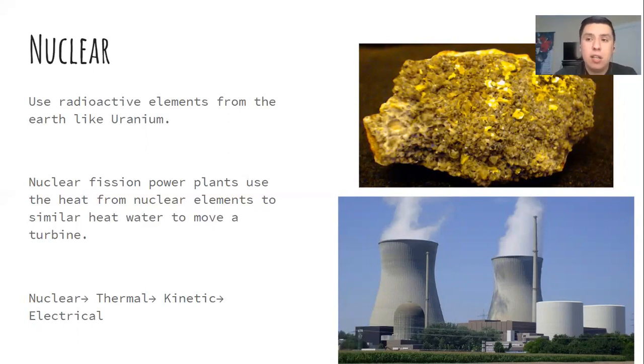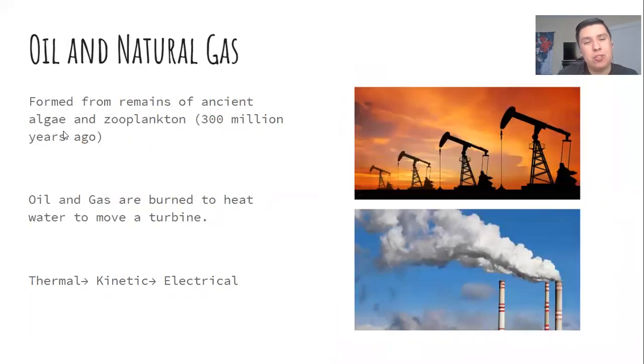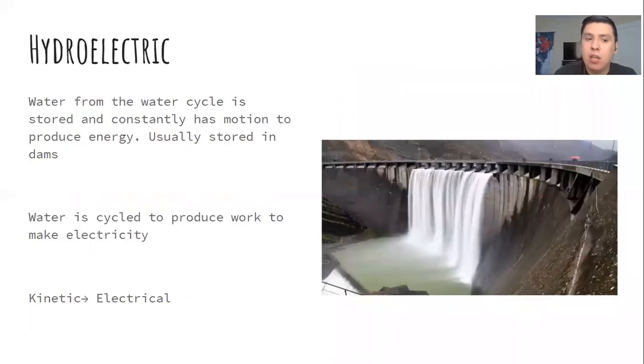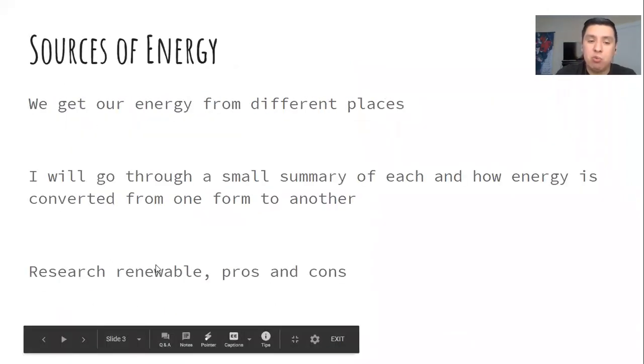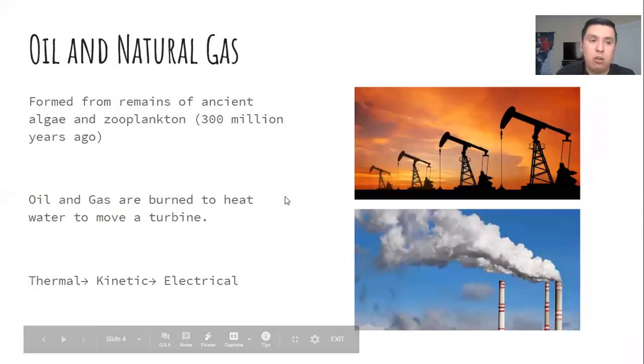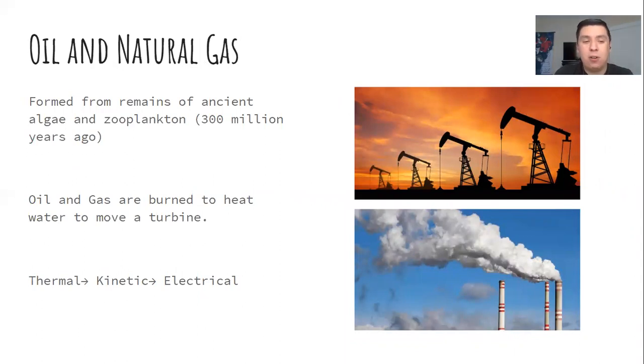That's the last of the sources of energy I'll focus on. For your assignment, you're going to research more about all these types of energy. I basically gave you the answers to the first two questions. Then you're going to research whether or not that type of energy is renewable and the pros and cons of each type of energy. What are the advantages of using oil and natural gas? What are the disadvantages? Thank you, and this is for Lesson 7 on sources of energy. Bye.